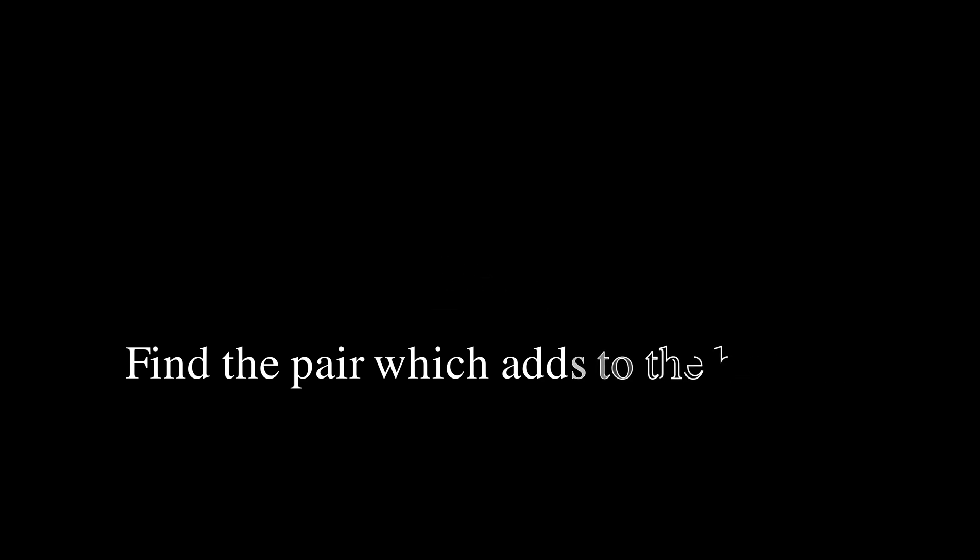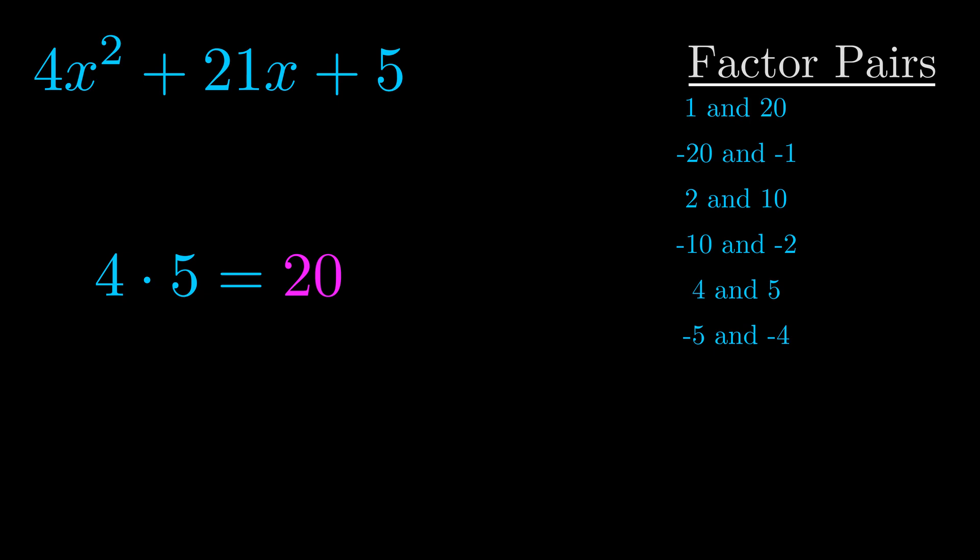The b value is the coefficient on the x term. That's the middle term, the one that we haven't done anything with yet. And really this is the only factor pair that we need.